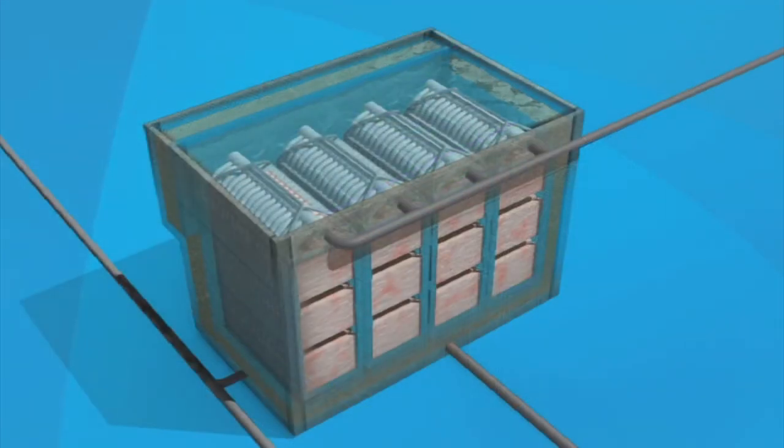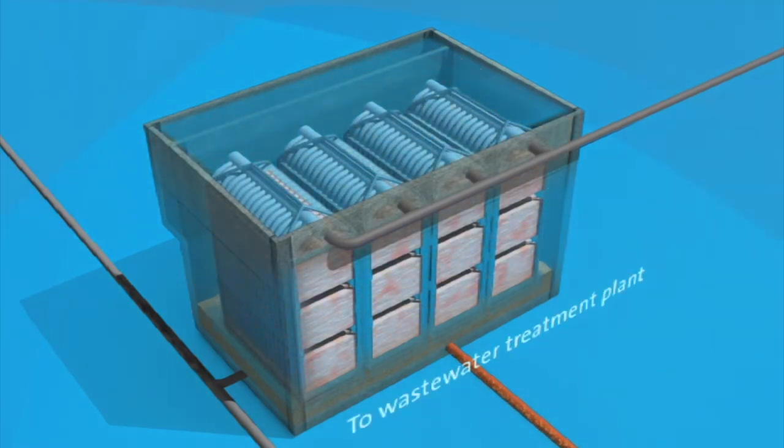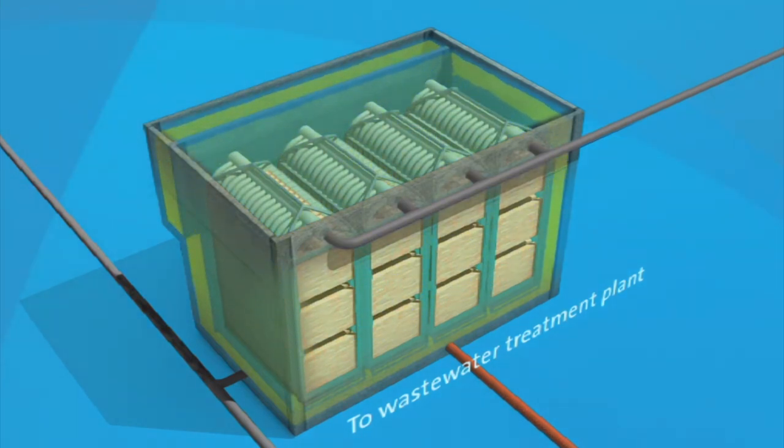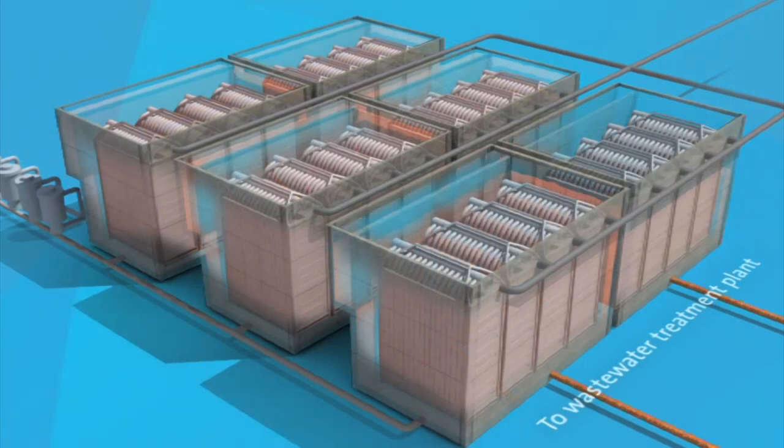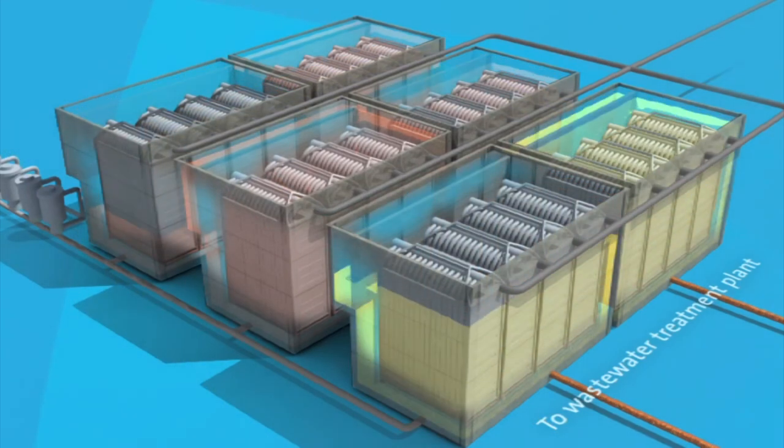In addition to backwashing, chemical cleaning cycles remove any material still stuck to the membranes. Each cell is drained and its membranes are soaked in a cleaning solution for several minutes. This solution is then drained and flushed from the cell before the regular ultrafiltration cycle begins again. Chemical cycles occur every 24 hours in one cell at a time.